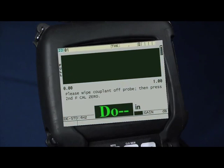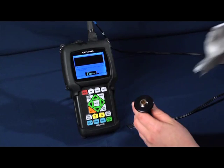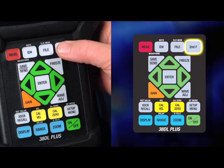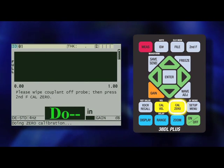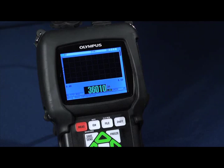The gauge will prompt us to perform a DO0. This is done by wiping the couplant off the tip of the probe, then pressing the second function and the CAL0 button. The gauge will automatically go out and measure the time of flight to the transmit and receive side of the transducer, allowing the gauge to compensate for any changes in the transducer due to wear or temperature.